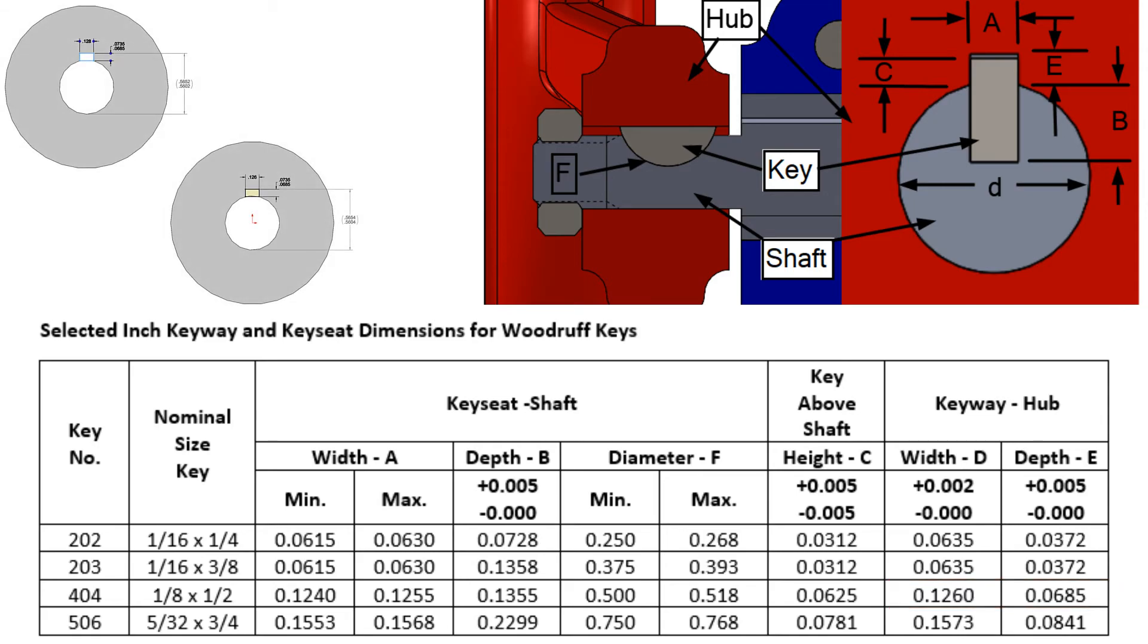When dimensioning the keyway, it would be helpful to add the maximum and minimum reference dimension as shown here, as this dimension makes inspection on the shop floor quicker. For this example, the range of 0.5604 to 0.5652 would be given, and parts outside of this range would require further inspection to determine if they are within the acceptable limits.